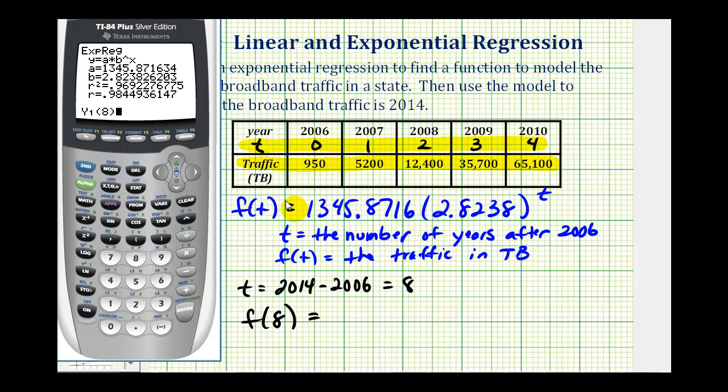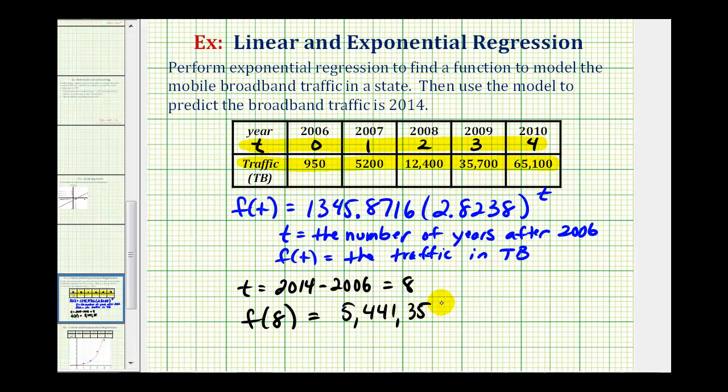So we will compare the two function values. But let's go ahead and use the more accurate one. Rounded to the nearest terabyte, this would be 5,441,359, which would be the prediction for the year 2014. Now let's see how different this value would be if we used our function to determine the value of f(8).